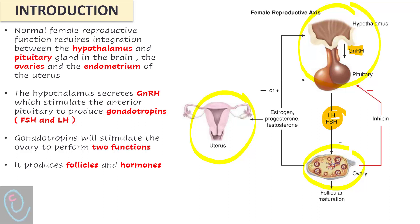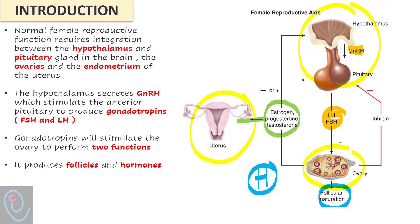Gonadotropins stimulate the ovary to perform two functions. First, it produces follicles, known as folliculogenesis. It also produces hormones — steroid hormones, meaning estrogen and progesterone, and peptide hormones like inhibin. Steroid hormones will prepare the endometrium for implantation, and also affect the hypothalamus and pituitary glands, known as the feedback effect.